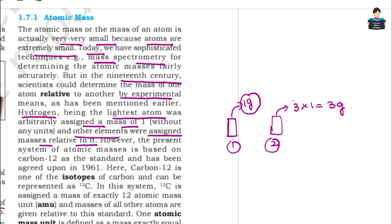The present system of atomic masses is based on carbon-12 as the standard. It has been agreed upon in 1961. In 1961, the carbon-12 atom was chosen as the reference.